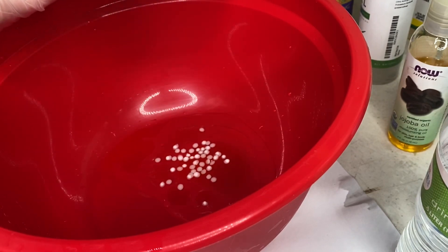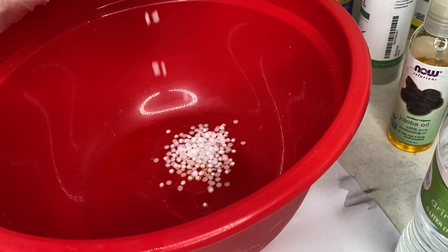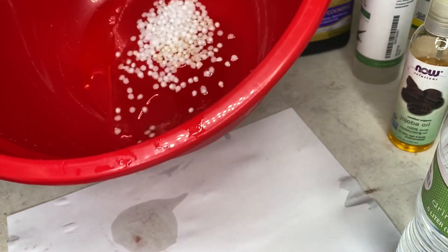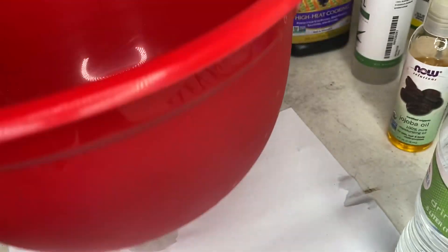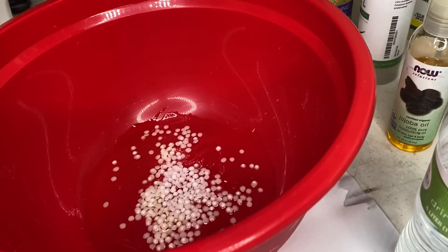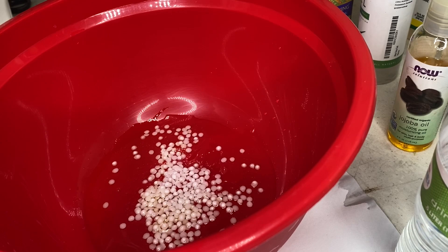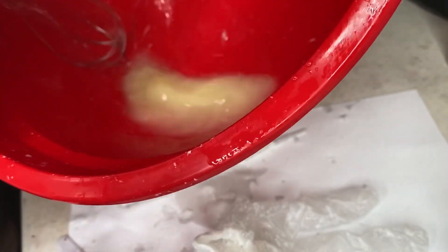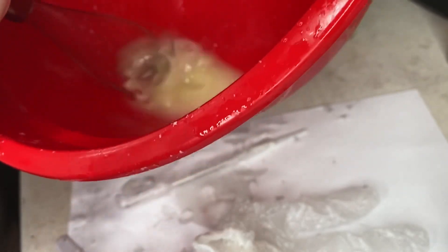Right here I'm adding in the emulsifying wax. I added a good amount here. You can add as much as you want. The more wax, the thicker of a serum it would be. The less would be more of a creamier one. I would recommend just doing a little bit at a time to make sure that's what you want. I went and put it in a microwave for 30 seconds.